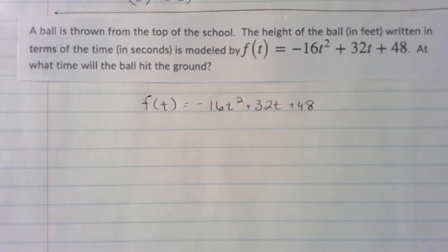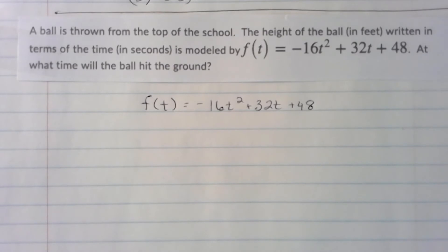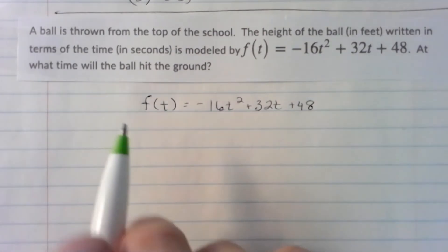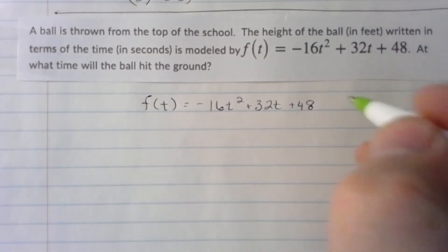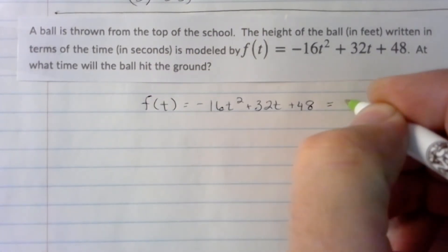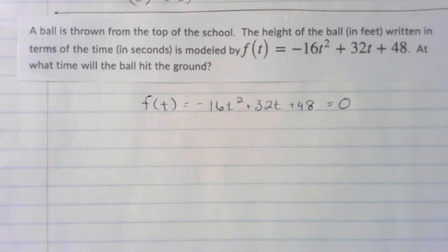A ball is thrown from the top of the school. The height of the ball in feet, written in terms of time in seconds, is modeled by f(t) = -16t² + 32t + 48. At what time will the ball hit the ground? It is when the ball is at 0 feet, so we're setting that function equal to 0 and solving from there.